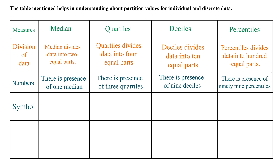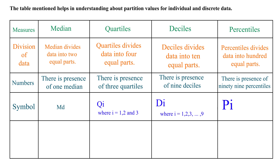Symbols: Median is denoted by Md. Quartile is denoted by Qi, where i equals one, two, and three. Deciles is denoted by Di, where i equals one, two, three, till nine. Percentile is denoted by Pi, where i equals one, two, three, till ninety-nine.